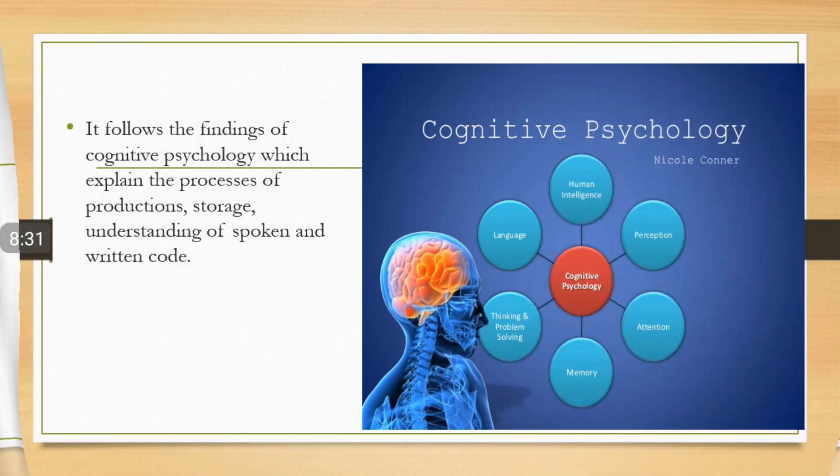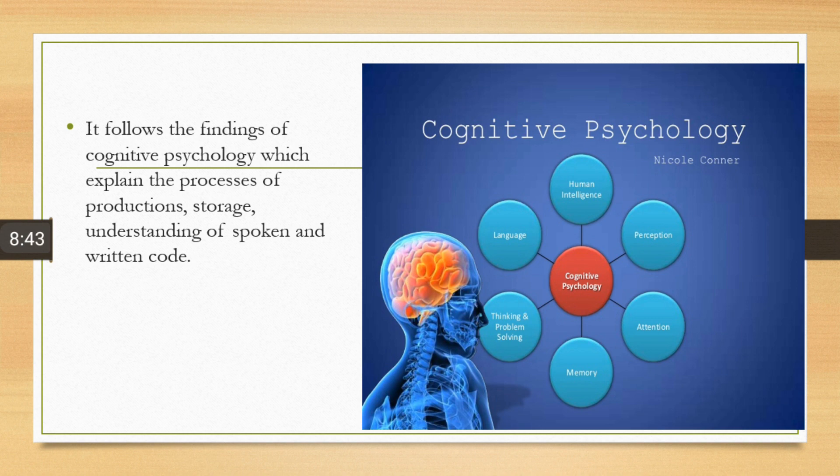And at the last, cognitive psychology. It follows the findings of cognitive psychology which explain the processes of production, storage, language, understanding of spoken and written code. In cognitive linguistics, we also focus on the process of production of sound, storage of language, understanding of spoken and written code.